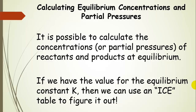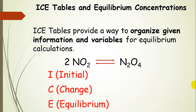If we have the value for the equilibrium constant K, we can use an ICE table to figure out what the equilibrium concentrations or partial pressures would be. ICE tables are not strictly required for equilibrium calculations, but they are a very convenient way to organize all the information and variables.